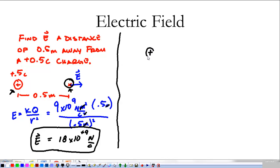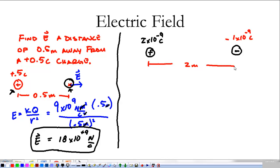Let's say I have a positive charge of 2 times 10 to the negative 9th coulombs — 2 nanocoulombs — and over here we have a negative charge of negative 1 times 10 to the negative 9th coulombs, negative 1 nanocoulomb. Nano means times 10 to the negative 9th. The two charges are 2 meters apart. We're going to look at the electric field in the dead center between the two of them. What is the total electric field at that point from both charges?